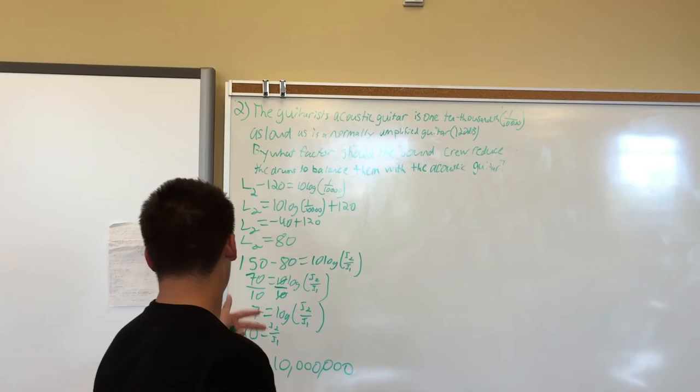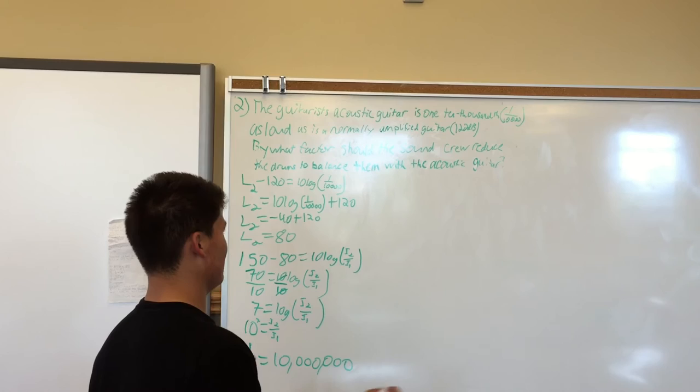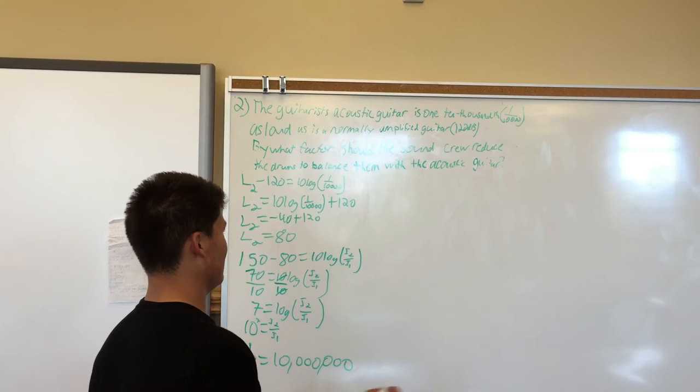What this tells us is that the drums are 10 million times as intense as an acoustic guitar, and we want to balance out the acoustic guitar and the drums. So what the sound crew needs to do is reduce the drums by 10 million times to bring balance with the acoustic guitar and the drums. And that's it.